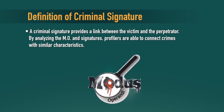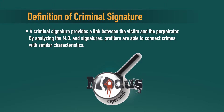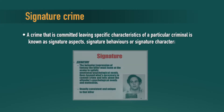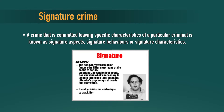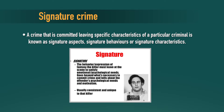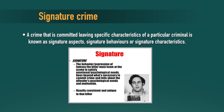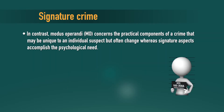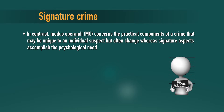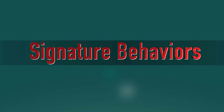By analyzing the modus operandi and the signatures, profilers are able to connect crimes with similar characteristics. A crime committed leaving specific characteristics of a particular criminal is known as signature aspects, also known as signature behavior or signature characteristics. In contrast, modus operandi concerns the practical components of a crime that may be unique to an individual suspect but often change, whereas signature aspects fulfill a psychological need.